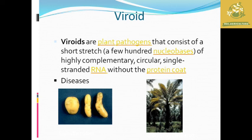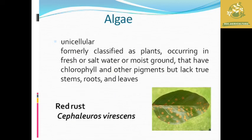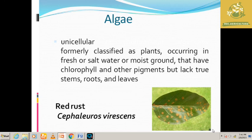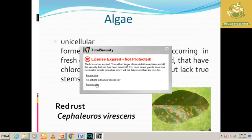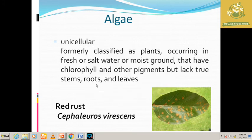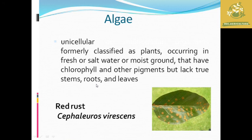While seeing about the disease symptoms, you can see viroid-affected potato, as well as the ground part of a tree which shows yellowing mainly due to viroid organisms.